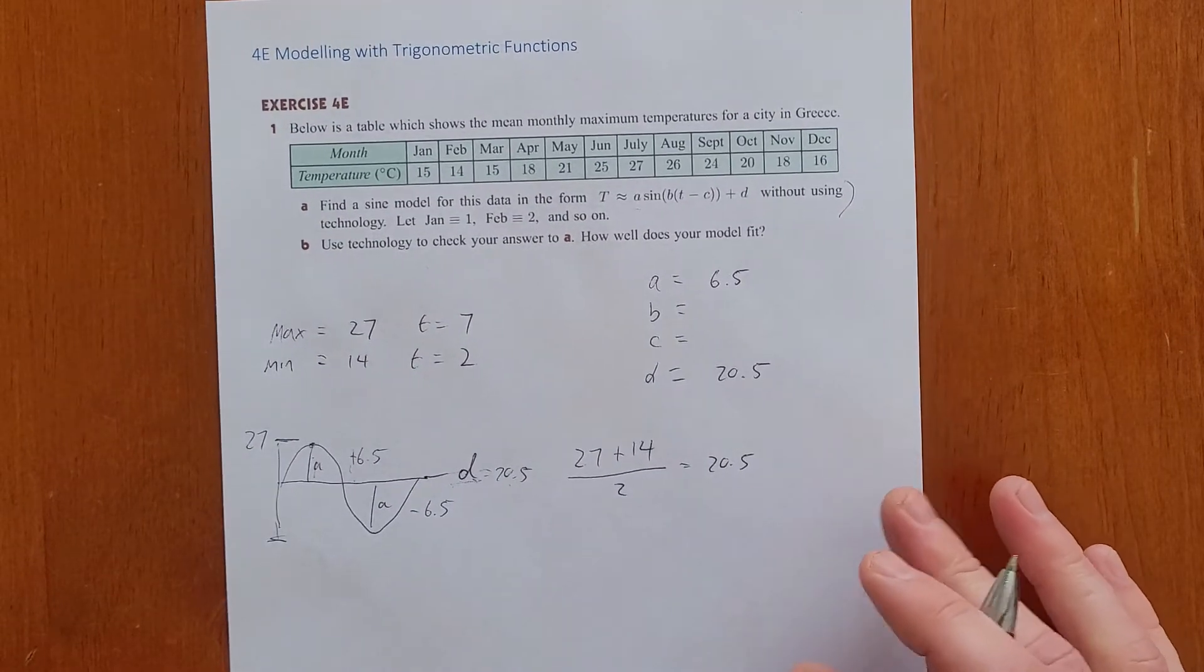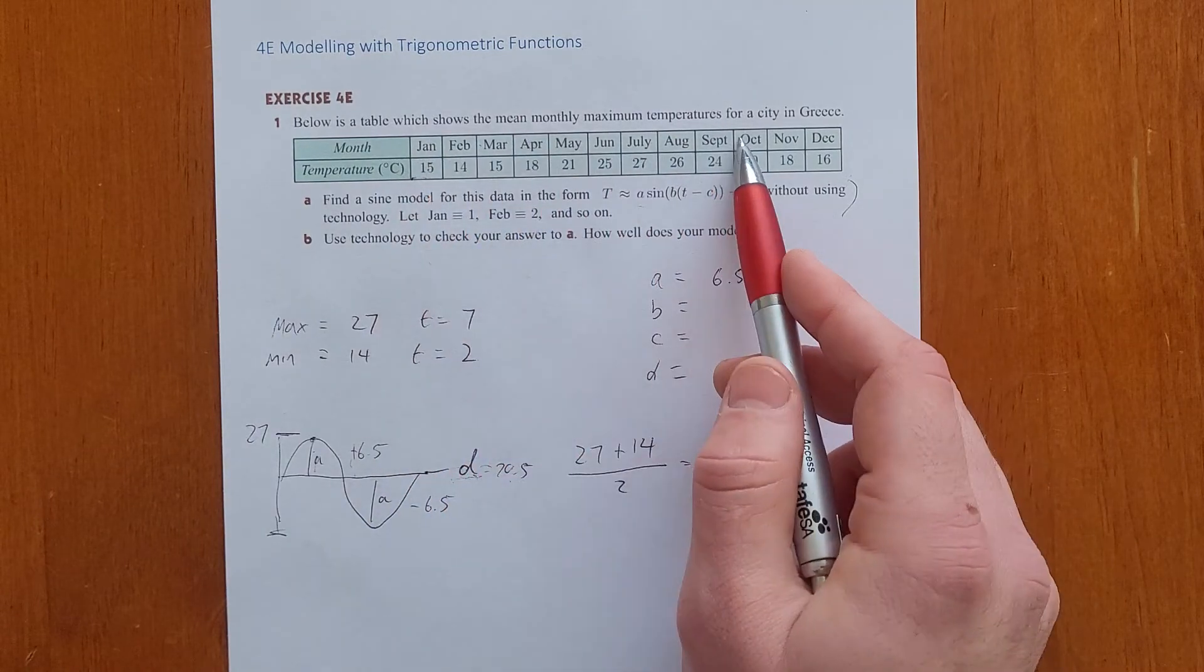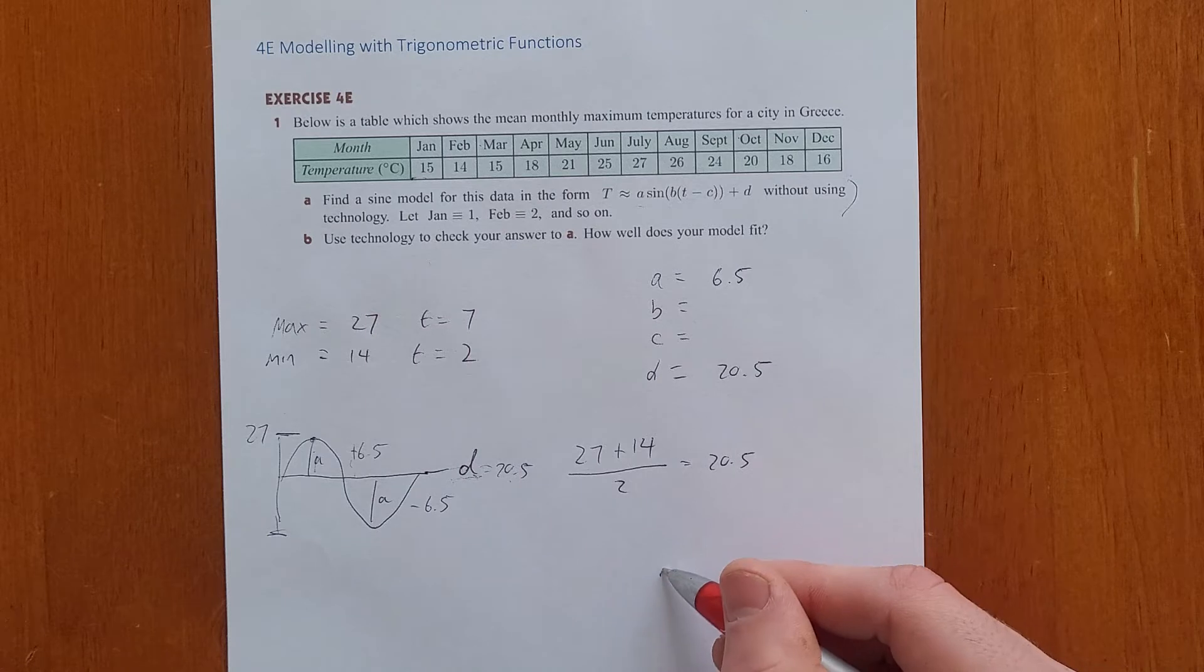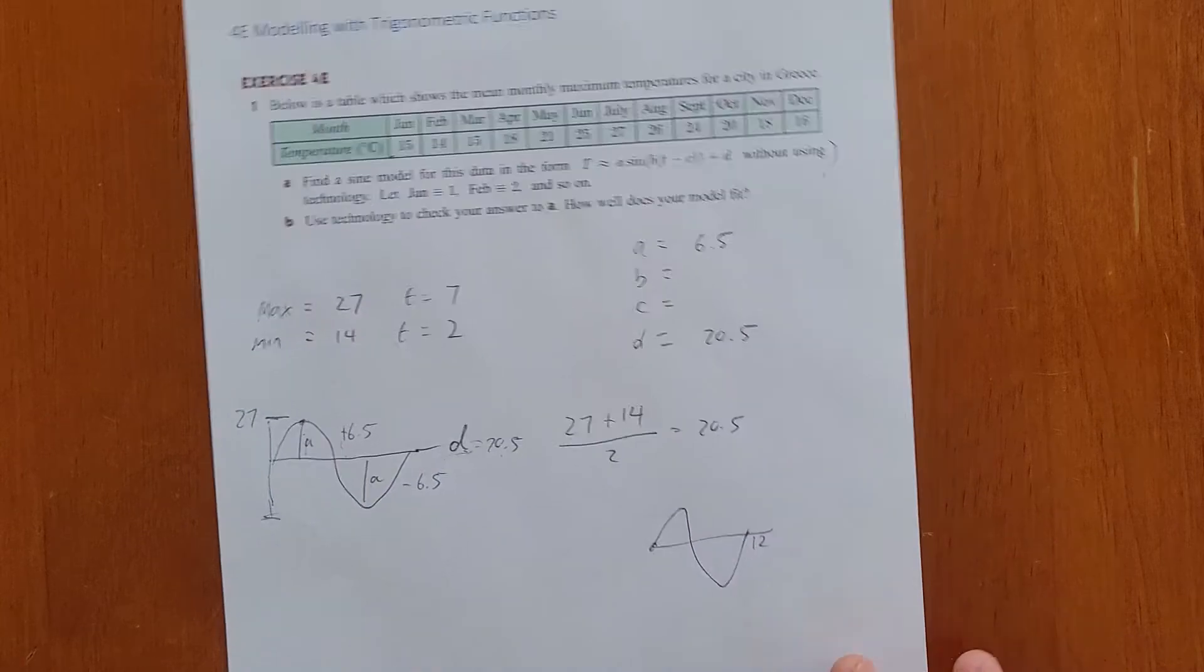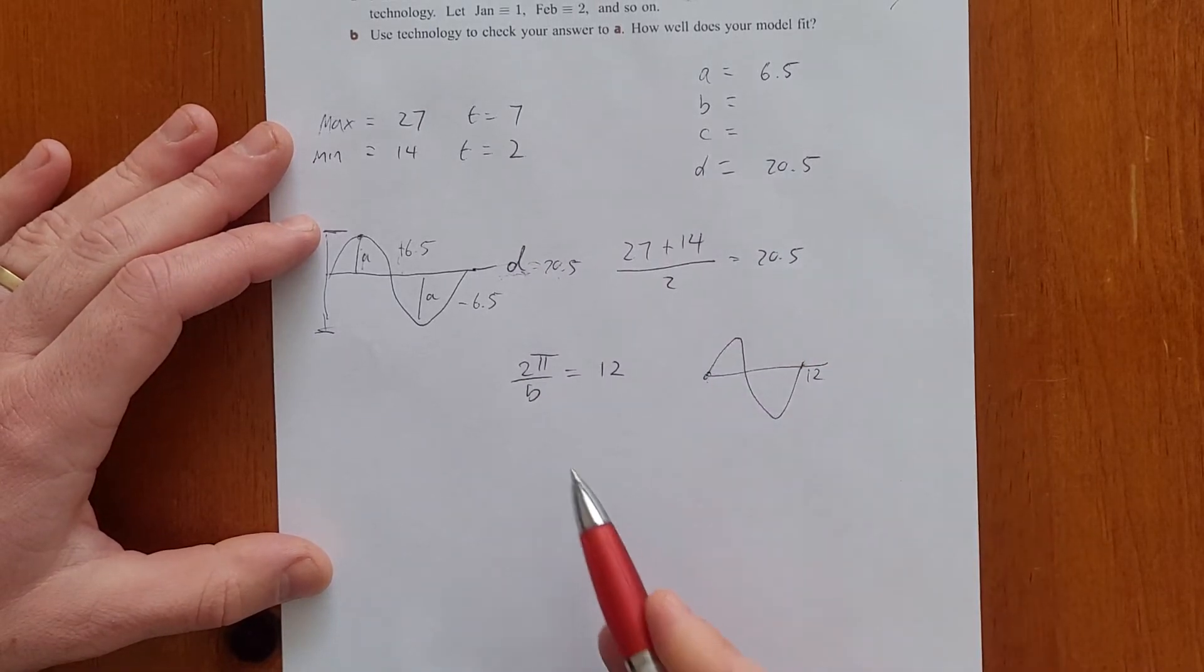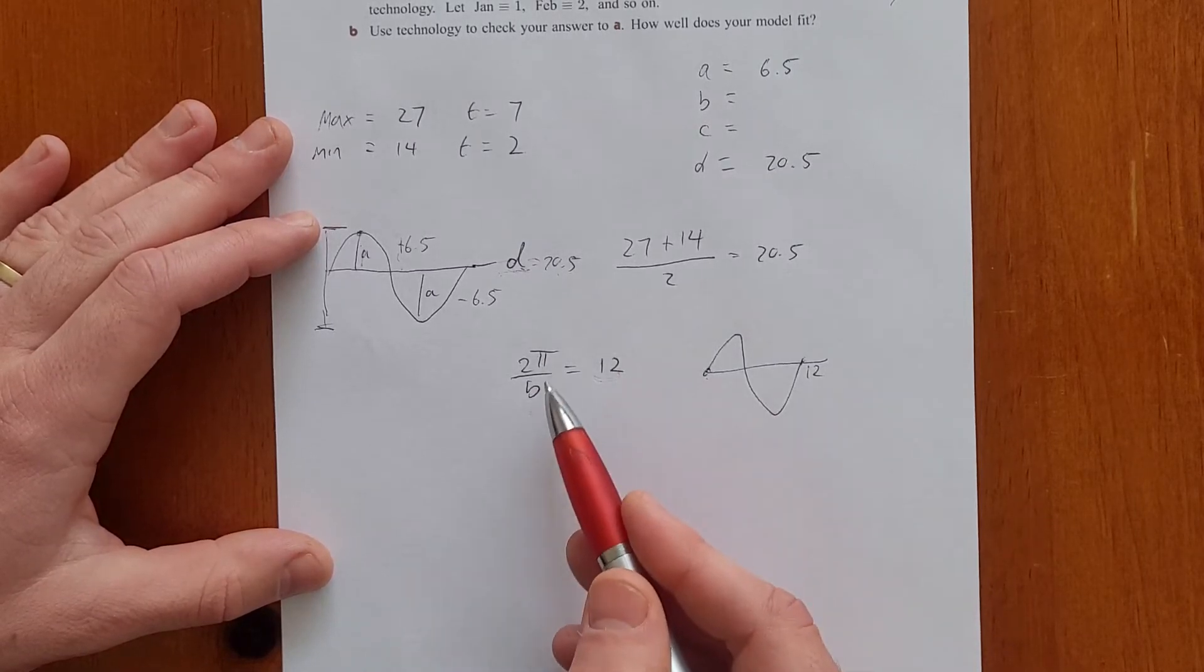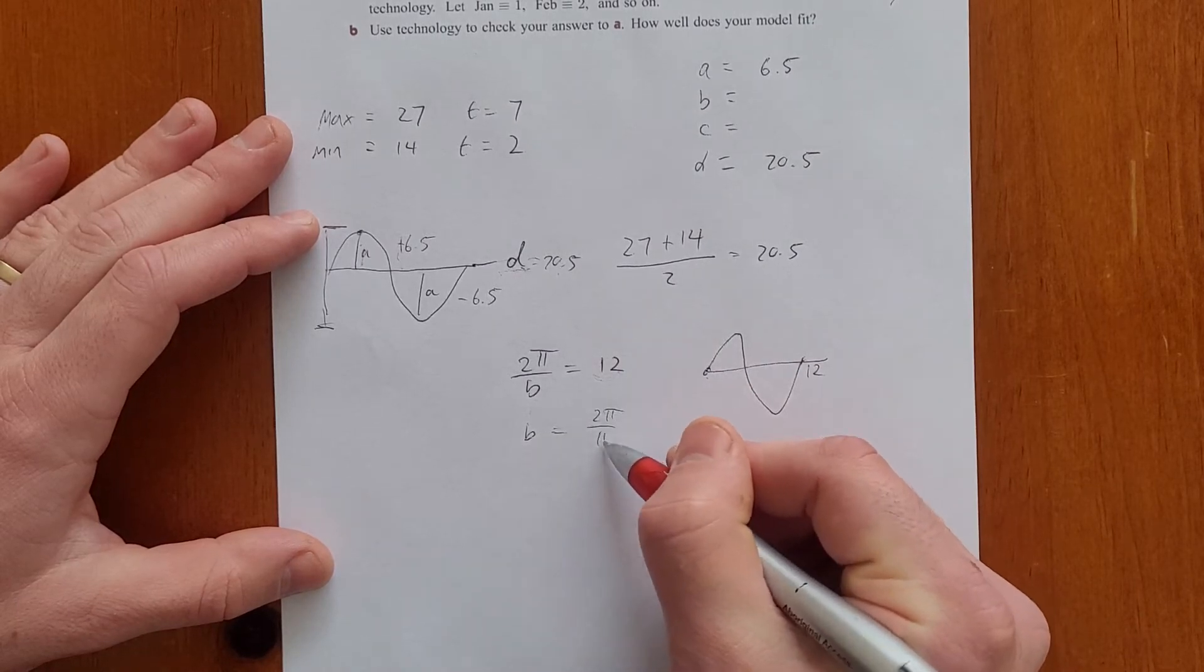In order to find the value of B, if we think of this wave, it's months, isn't it? And there's 12 months in a year, which means it's going to have a period of 12. The wavelength, the distance for one wave, is 12. That distance is 12 units. And so in order to find the value of B, what that means is 2π divided by B equals 12. Remember, the wavelength is 2π on B. The wavelength is 12, therefore 2π on B equals 12. Rearranging this, we'll get 2π on 12, which is π on 6.